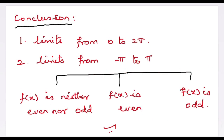Our final conclusion is that there will be two intervals of problems: one from 0 to 2π and another from −π to π. From −π to π, we have three types of problems: one is neither even nor odd, and the other possibilities are even function or odd function. Let us solve all cases of problems in the upcoming videos. Do share and subscribe to this channel. Thank you.